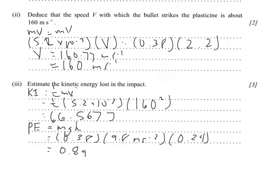So to find the loss of kinetic energy at the impact, you have to take the energy before, which was 66.57 approximately, and subtract what we just solved for, 0.89. And this is going to give you approximately 66 joules worth of energy that was lost during the impact.